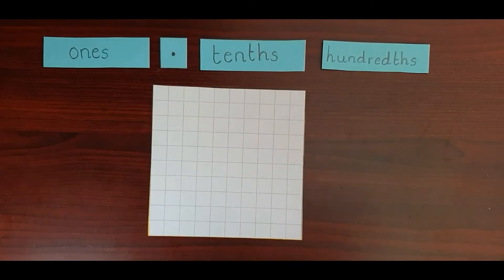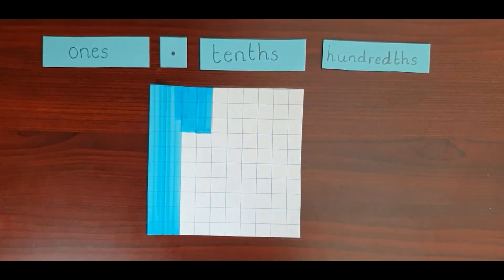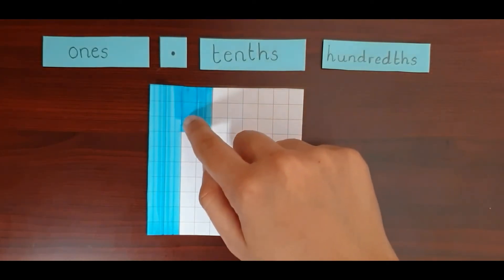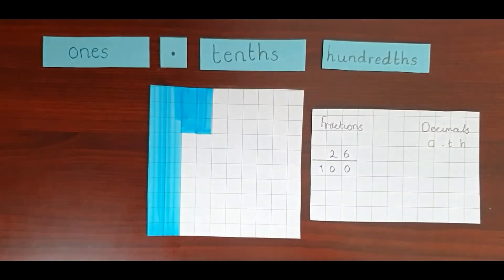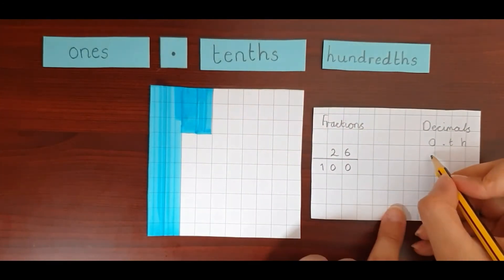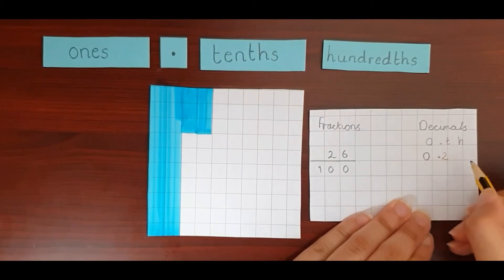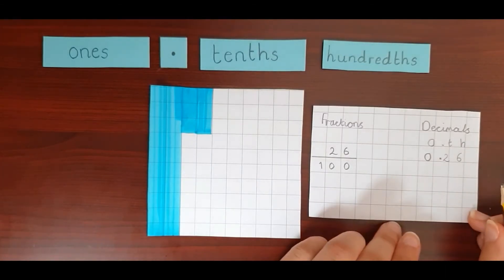Now using your understanding of tenths and hundredths, let's work out what some of these fractions and decimal equivalents look like. For each set of images, press pause and have a go working out what they are. So for this first one we have two lots of ten squares, which is 20 hundredths or two tenths, and one, two, three, four, five, six hundredths — so that would be twenty-six hundredths. As a decimal, there are zero ones, two tenths, and six individual hundredths, so our decimal is 0.26.